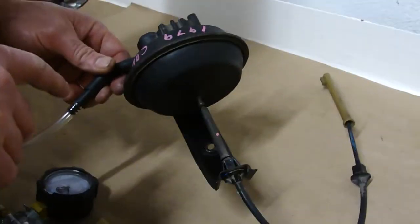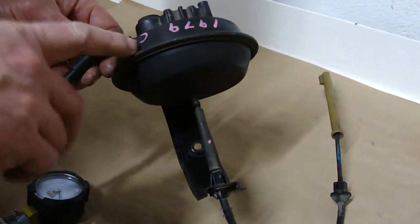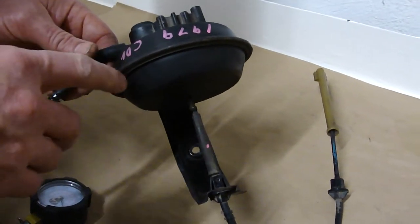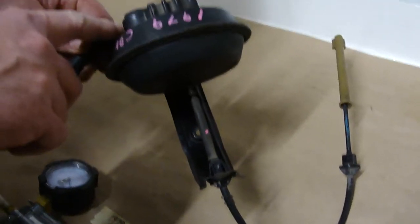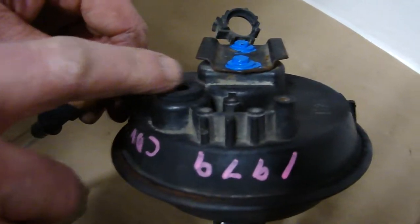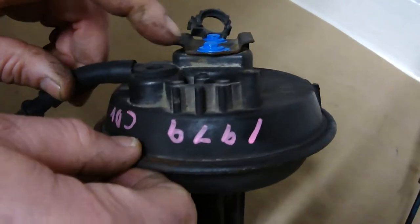Alright, I'm going to test the 79 Coupe DeVille cruise control servo, vacuum servo, by using a vacuum pump hooked up to this vacuum port here. I'll be putting my finger over here to block the vacuum from escaping.